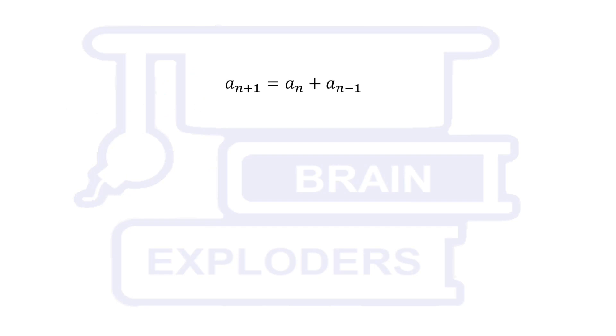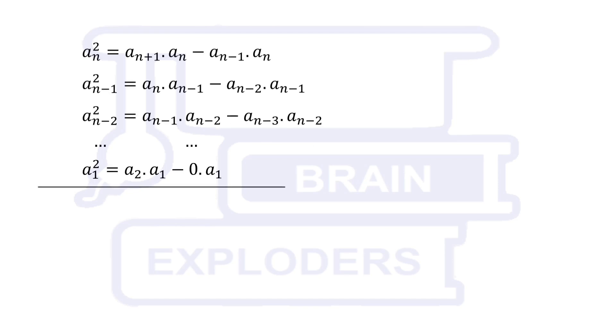In the relation written on the screen, multiply an both sides. On rearranging these terms, we find that an squared is equal to an plus 1 times an minus an times an minus 1.